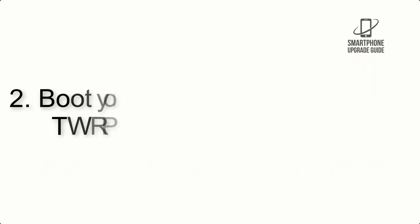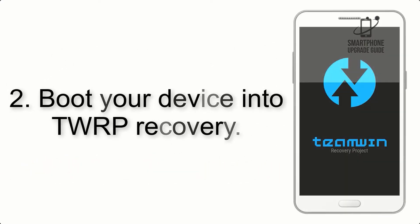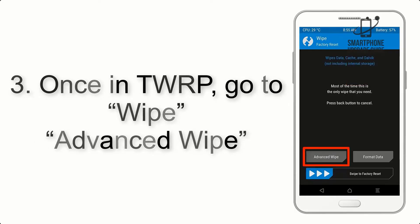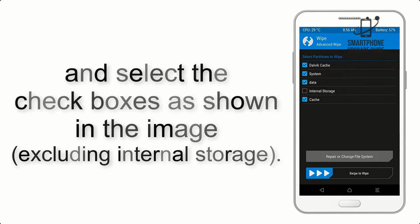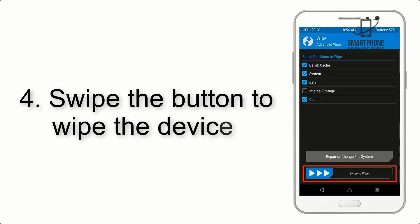Step 2: Boot your device into TWRP recovery. Once in TWRP, click on Advanced Wipe and select the checkboxes as shown in the image, excluding internal storage.